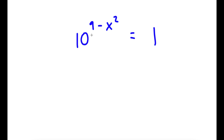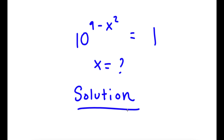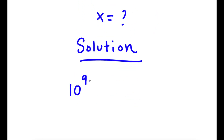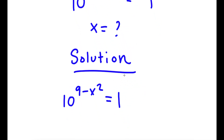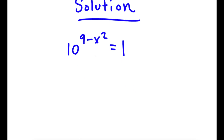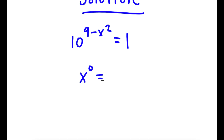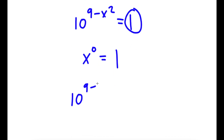In this problem, I have 10 to the power of 9 minus x squared is equal to 1. I want to find the value of x. Since any number to the power of 0 is simply 1, I'm going to rewrite 1 as 10 to the power of 0. So now I have 10 to the power of 9 minus x squared is equal to 10 to the power of 0, because 10 to the power of 0 is the same thing as 1.